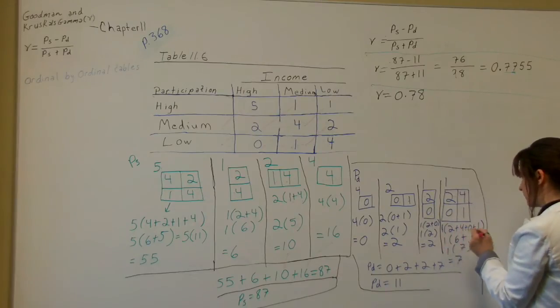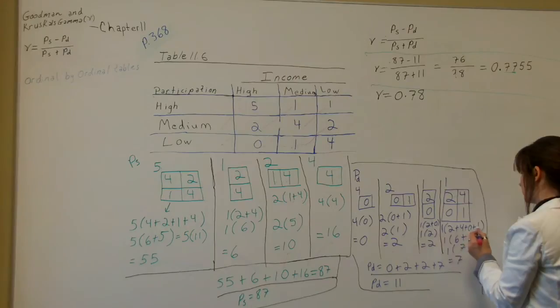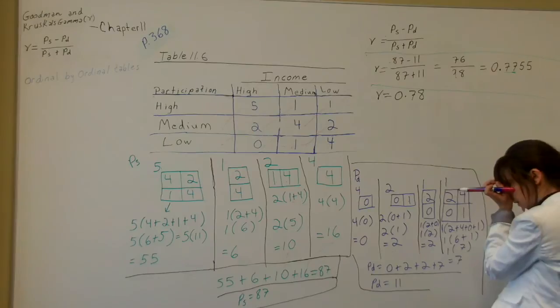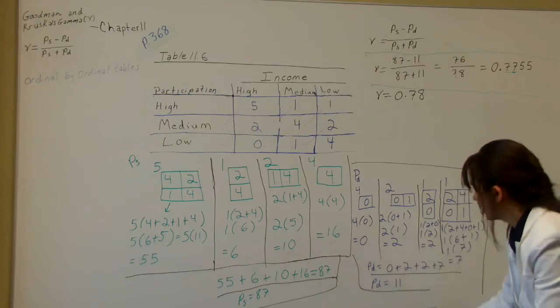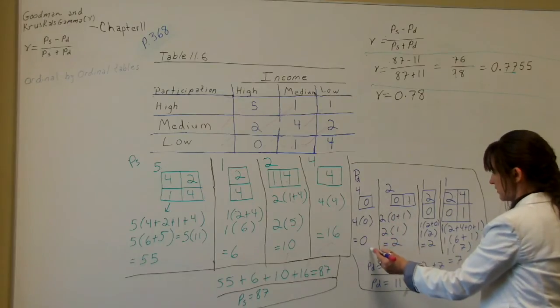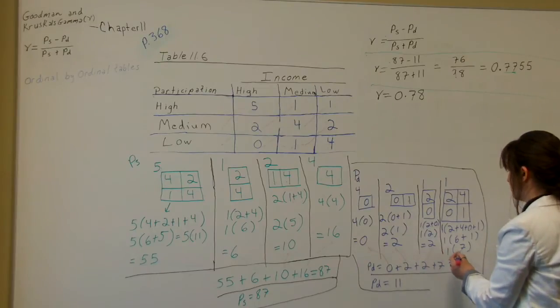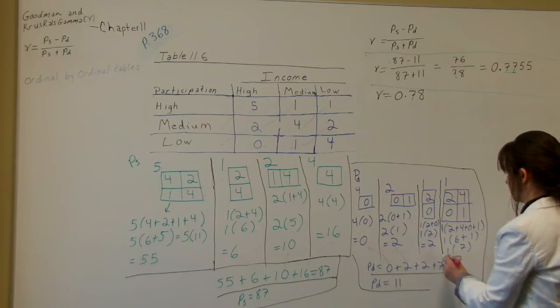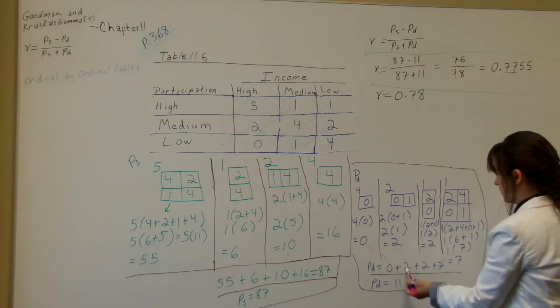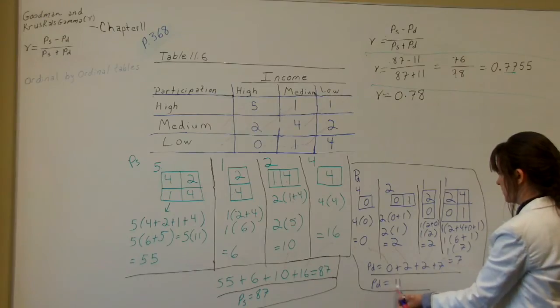And this one is 1 multiplied by 2 plus 4 plus 0 plus 1. You're adding all the numbers in the boxes. I separate it just in case I trip up on my addition, so the professor can see. 1 times 2 plus 4 is 6. 0 plus 1 is 1. So 6 plus 1 is 7. 1 times 7 is 7. Now, to figure out the bottom part here, we're adding now those numbers together from each section we just figured out. So it's PD equals 0 plus 2 plus 2 plus 7. So 0 plus 2 is 2. Plus 2 is 4. Plus 7 is 11. So the PD equals 11.